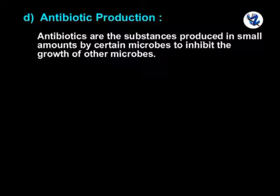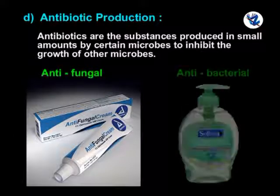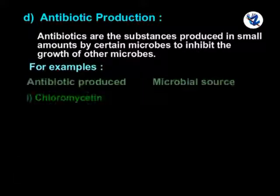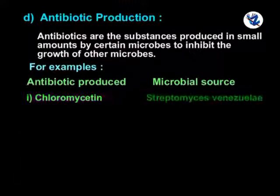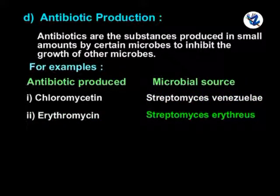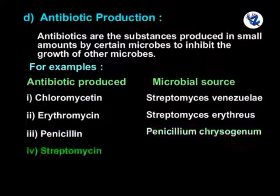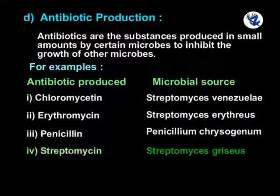Antibiotic production: antibiotics are substances produced in small amounts by certain microbes to inhibit the growth of other microbes. They may be antifungal or antibacterial. Examples: Chloromycetin is obtained from Streptomyces venezuelae; Erythromycin is obtained from Streptomyces erythraeus; Penicillin is obtained from Penicillium chrysogenum; and Streptomycin is obtained from Streptomyces griseus.